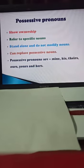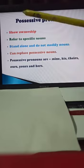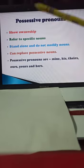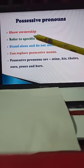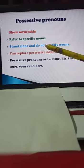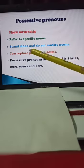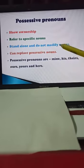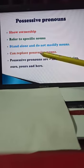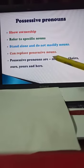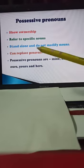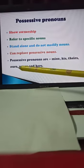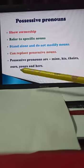Now, possessive pronoun. Possessive pronouns show ownership. For example: This is my book — and this book is mine. They are referred to specific nouns. They stand alone and do not modify nouns — meaning they do not describe the noun. For example: This is her book; this book is hers. Possessive pronouns are: mine, his, theirs, ours, yours, and hers. These possessive pronouns end with S, except mine and his.